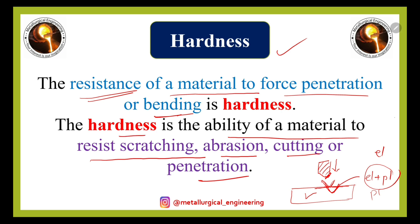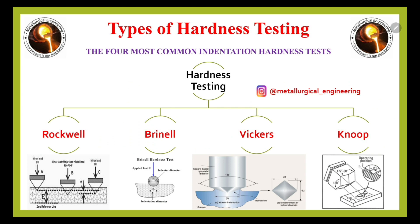Hardness is basically of four types: the first is Rockwell, the second is Brinell, the third is Vickers, and the fourth is Knoop hardness. In Rockwell hardness, a specific type of notch-shaped indenter penetrates the material. This is known as the Rockwell indenter, and the hardness measured with this indenter is known as Rockwell hardness.